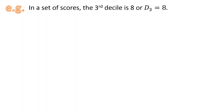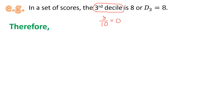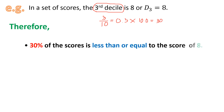In a set of scores, the third decile is 8, or D-sub-3 is equal to 8. For us to interpret this instantly, the first thing is to simply convert the position into percent. Third decile means 3 divided by 10, since we're talking about decile. Dividing these two gives us 0.3. Converting this decimal into percent by multiplying by 100 gives us 30. Therefore, we may conclude that 30% of the scores is less than or equal to the score of 8.